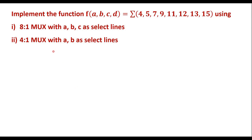In this video, I will consider one example on implementation of a given boolean function using an 8-to-1 MUX and a 4-to-1 MUX. Implement the function f(a, b, c, d), where the minterm values are given. We are supposed to implement this using an 8-to-1 MUX with a, b, c as select lines, and a 4-to-1 MUX with a, b as select lines.